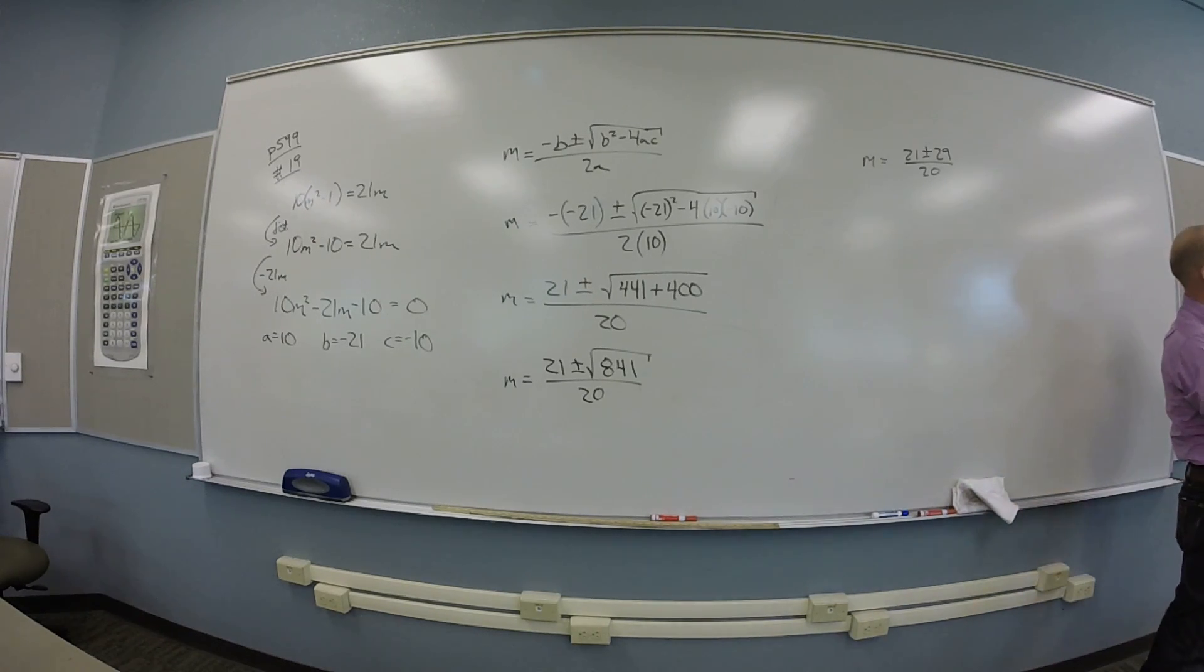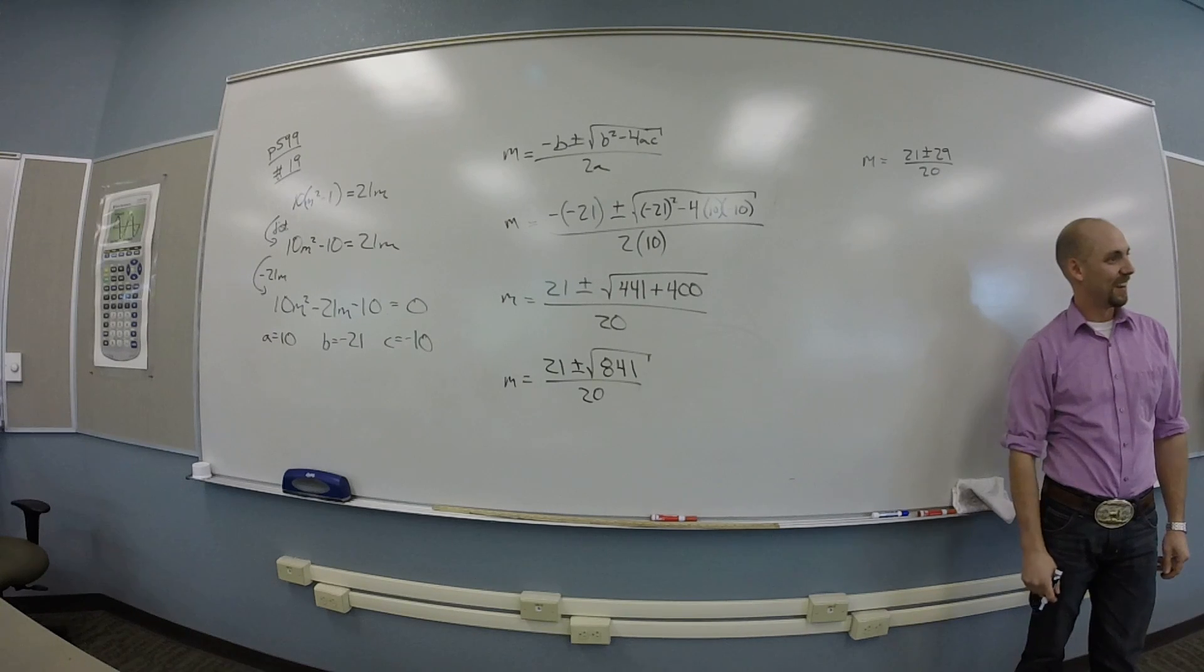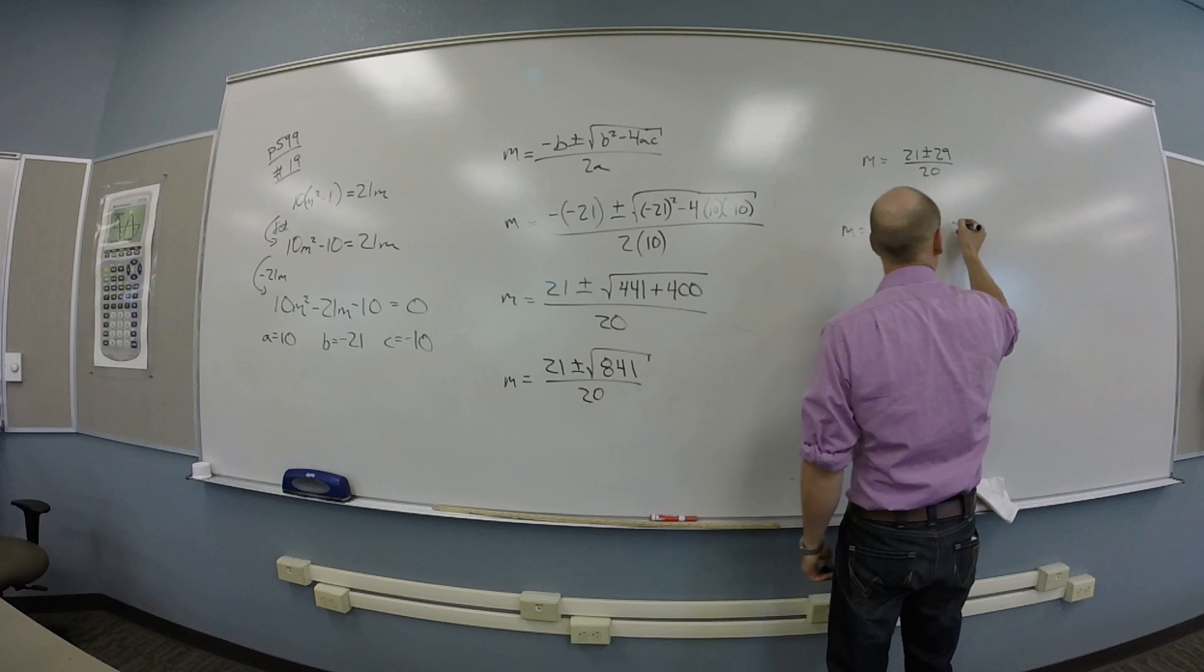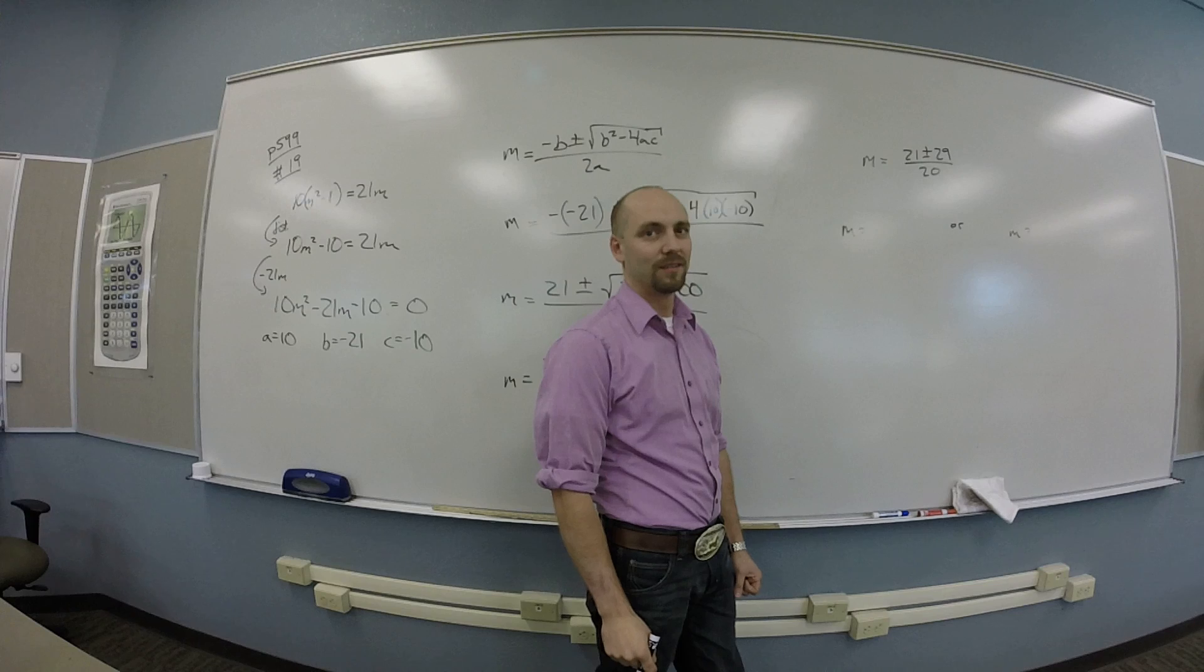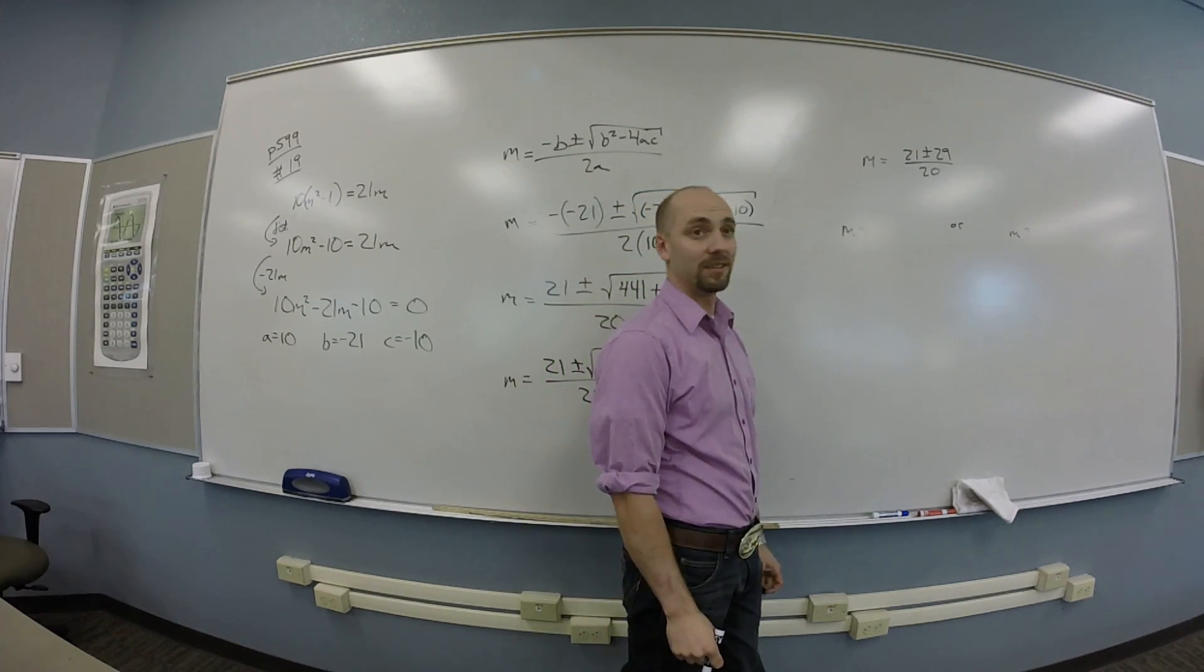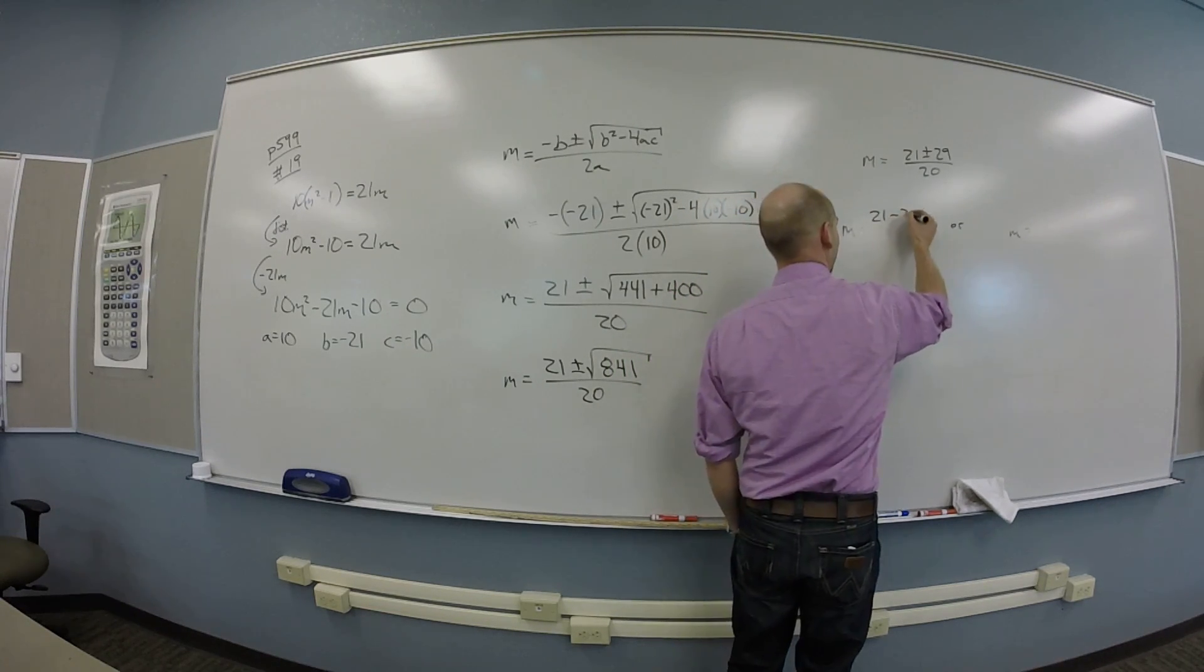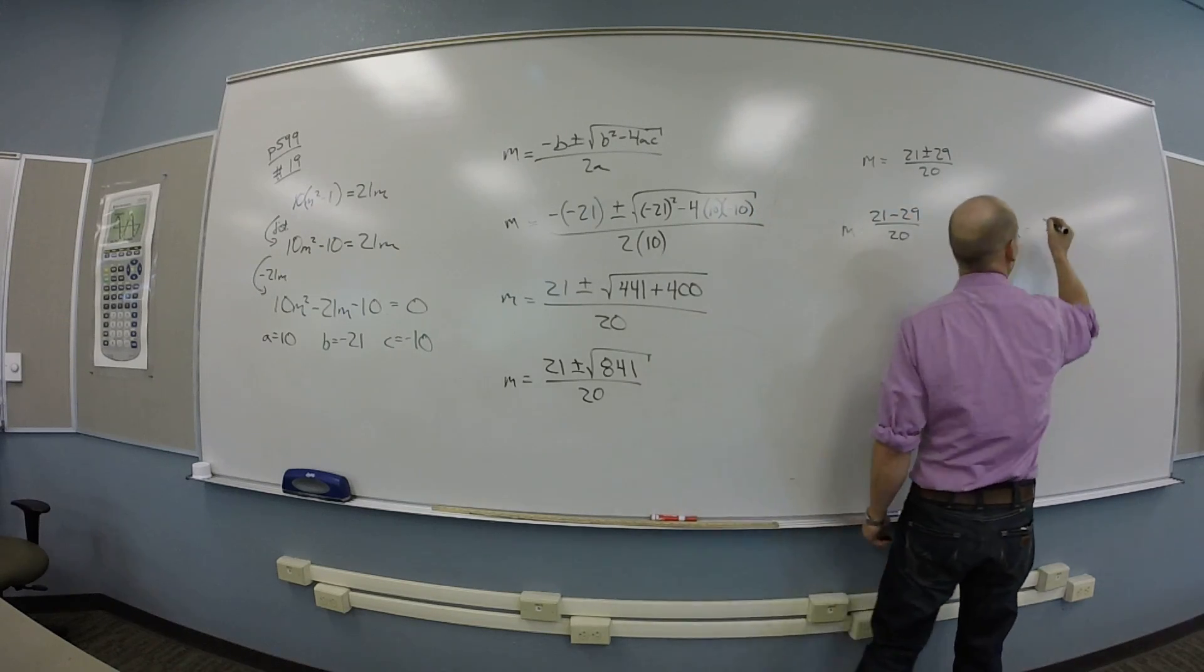So then you just split it into your question. Did you have a question? No. Sorry? I think you had a question. Okay. So m is, or m is? Yes. 29 minus 29, 29 minus 29 over 20. Okay. 21 minus 29 over 20.